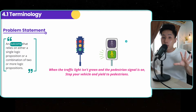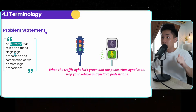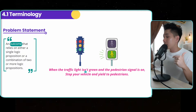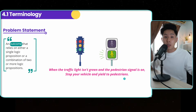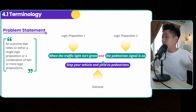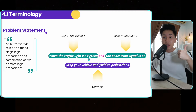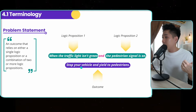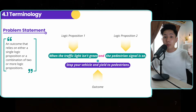When you combine multiple logic propositions together, you get what we call a problem statement — an outcome that relies on either a single logic proposition or a combination of two or more logic propositions. For example, when the traffic light isn't green and the pedestrian signal is on, stop your vehicle to yield to pedestrians. If we break this statement down, we see that there are two logic propositions: 'when the traffic light isn't green' and 'pedestrian signal is on.' When you combine them together, you get an outcome — whether to stop your vehicle or not. And as a result, this is what we call a problem statement.